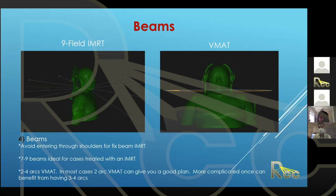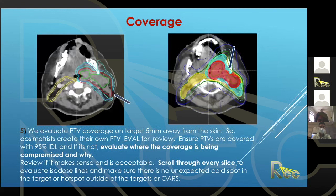Some more complicated tumors that overlap with many critical organs can benefit from one or two extra arcs, which can help with dose inhomogeneity. Another important point is to vary the collimator rotation when using multiple arcs — having a different collimator angle feathers the beam so you're getting the most efficient technique from both angles. If you have the same collimator angle on both arcs, you're basically treating with the same beam twice.